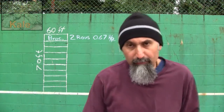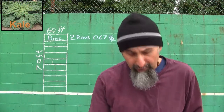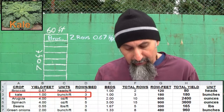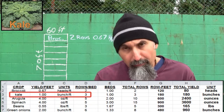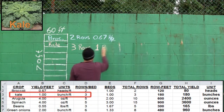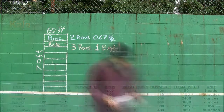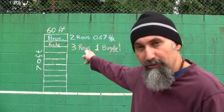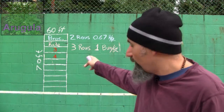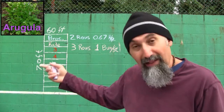In the second bed we're going to plant kale. The units for kale are one bunch per foot, and we can put in three rows per bed.